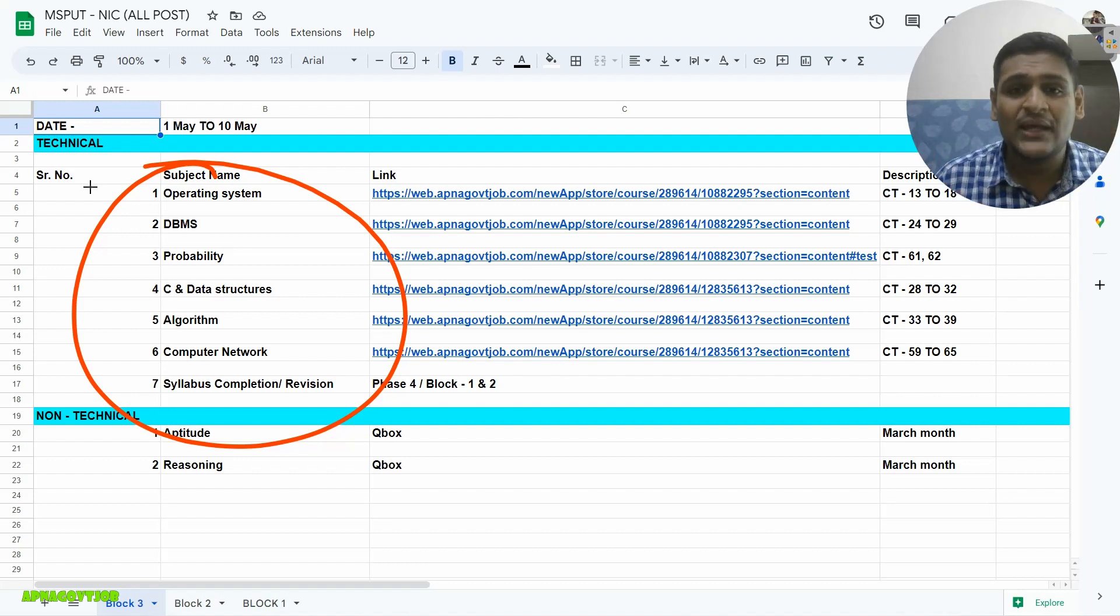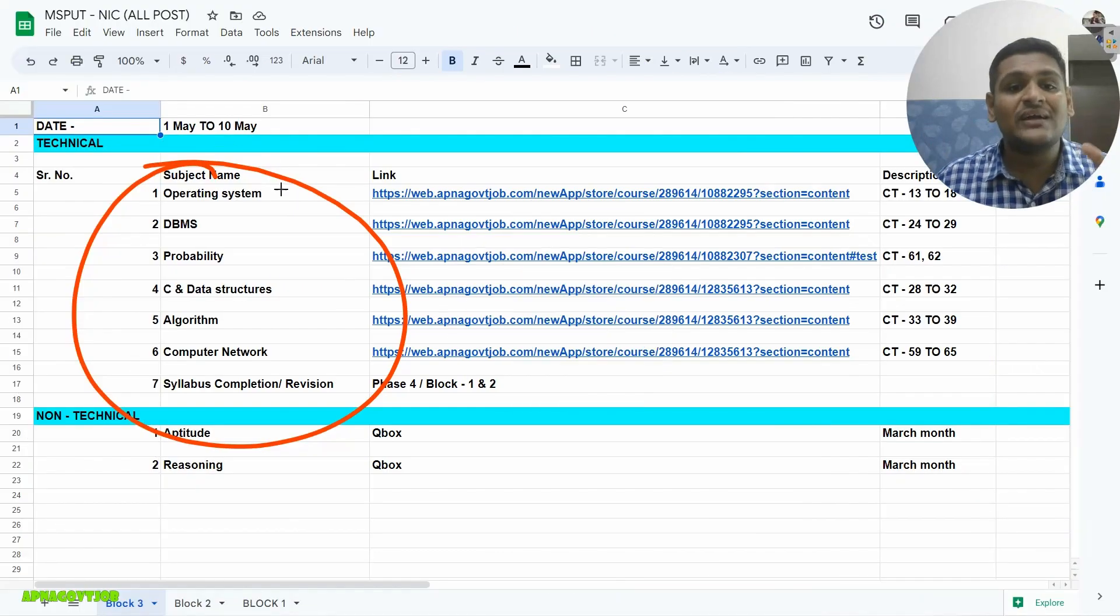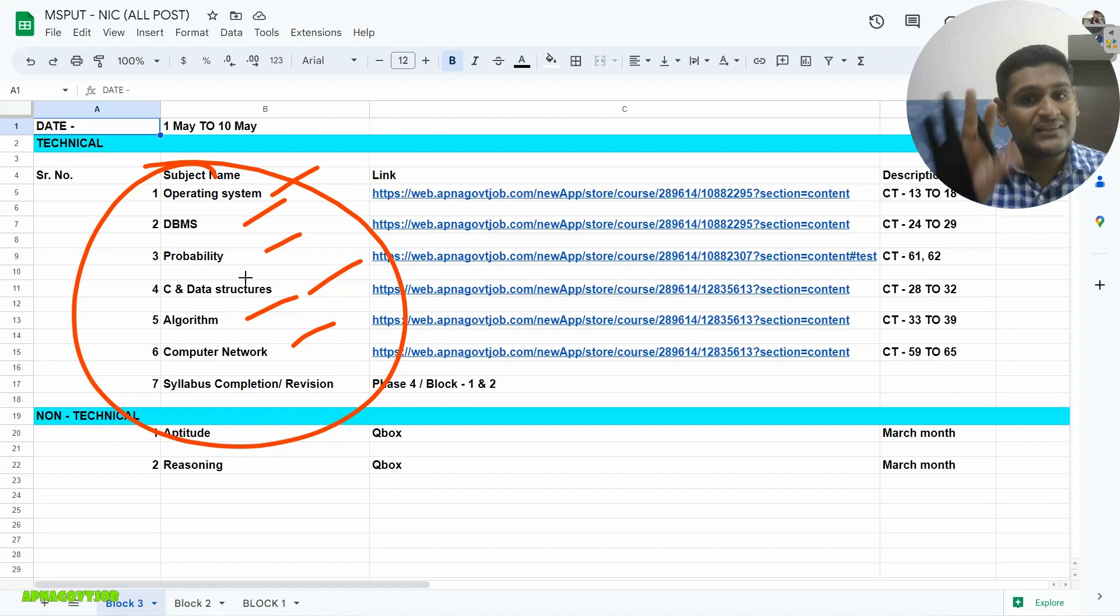But keep doing. I remember my golden statement. Don't forget our golden statement. That is most important. And now we are targeting Operating System, DBMS, Probability, C, Data Algorithm, Computer Network. These six subjects we are taking, 1st May to 10th May in Block 3.